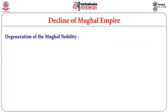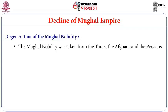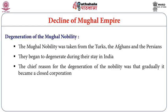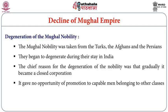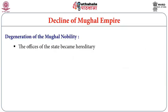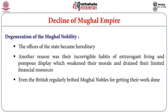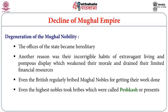The degeneration of Mughal nobility was another important factor. Drawn from Turks, Afghans, and Persians, the nobility gradually degenerated. It became a closed corporation, giving no opportunity to capable men from other classes, while offices became hereditary. Their habits of extravagant living and pompous display weakened morale and drained financial resources. Even the British regularly bribed Mughal nobles, and the highest nobles during the 18th century accepted bribes known as peskas or presents.